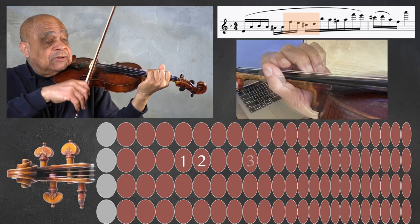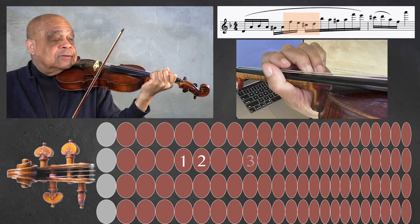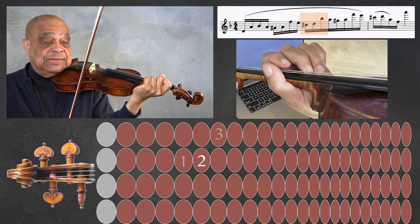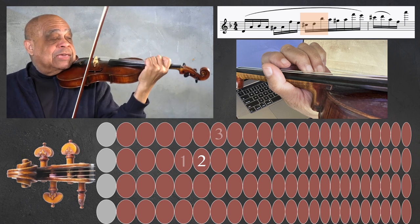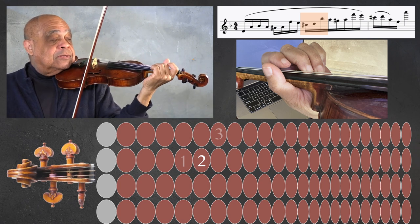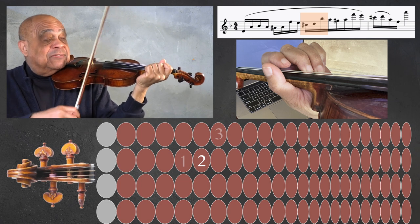And when we play our second finger, let's put our third finger down. Just like we did with the A and the F, we're going to do it with the D and the B flat.